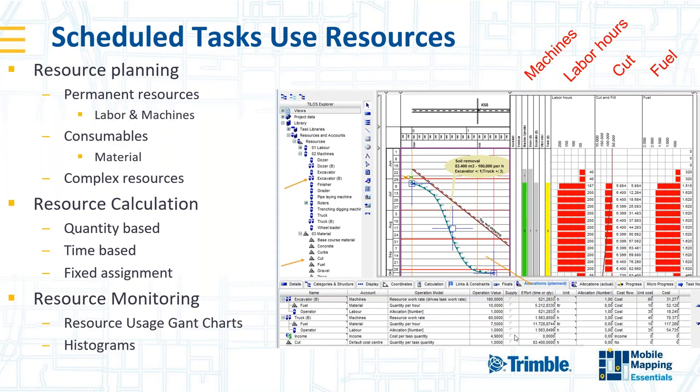Trimble has extended its connection with customers through the ability to better plan resource needs such as fuel, water, and servicing through the constructible model. You can also plug in different production rates for 3D machine control resources versus standard resources, and show the effect on production rates and associated costs like service and fuel, or specific activities and what that can do to the overall project schedule.